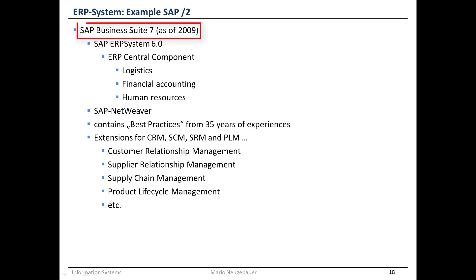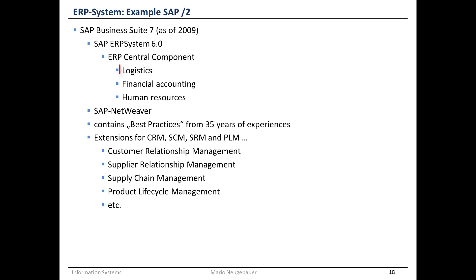So with SAP version 7, different central core components are present, such as logistics, financial accounting, and human resources — making up the core of the ERP system.